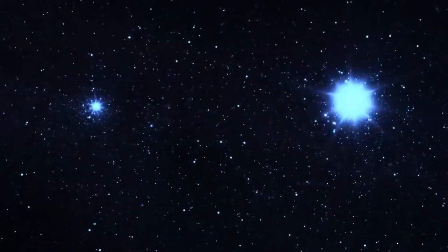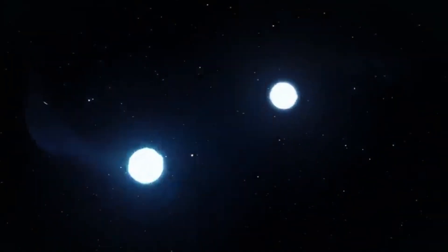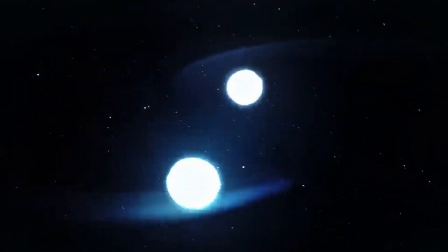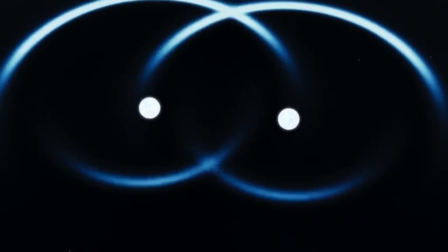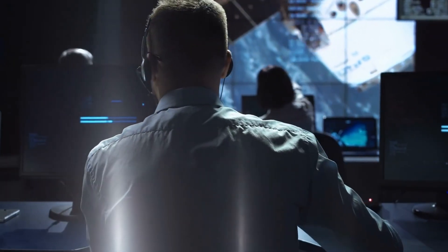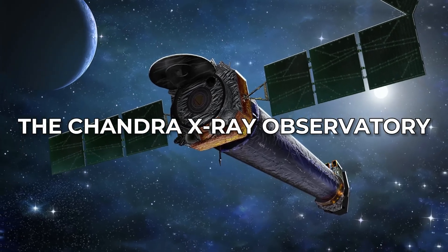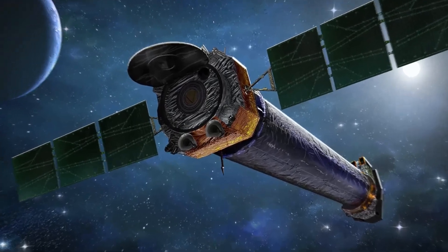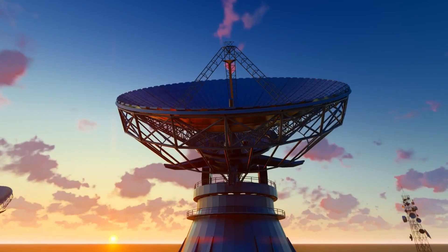And get this: their precision rivals that of atomic clocks, making them perfect for studying everything from gravitational waves to the fabric of space itself. To catch a glimpse of these cosmic marvels in action, scientists rely on high-tech observatories like the Chandra X-ray Observatory and the Very Large Array. These mighty machines record the pulsars' rhythmic beats, helping us unlock the secrets of the universe.